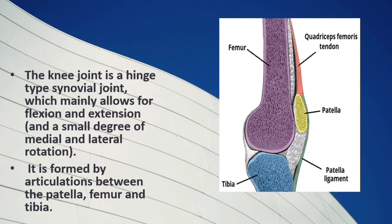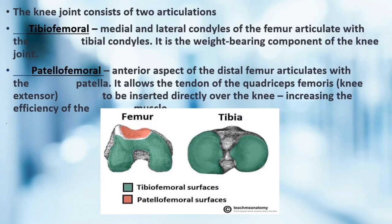The knee joint is a hinge-type synovial joint which mainly allows for flexion and extension, and a small degree of medial and lateral rotation. It is formed by articulations between the patella, femur and tibia. The knee joint consists of two articulations: tibiofemoral and patellofemoral. The joint surfaces are lined with hyaline cartilage and are enclosed within a single joint cavity. The patellofemoral articulation allows the quadriceps femoris tendon to insert directly over the knee, increasing muscle efficiency, providing a fulcrum to increase extensor power and reducing frictional forces on the femoral condyles.